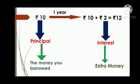In this picture we can see there is an amount of rupees 10 which is known as the principal amount. Suppose a borrower has borrowed rupees 10 from the bank for a period of 1 year. After that period of 1 year, the borrower will give back rupees 2 extra as interest to the bank. So in total, he will pay rupees 12 to the bank after a period of 1 year. This is how the bank works.